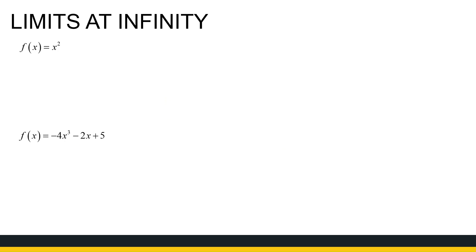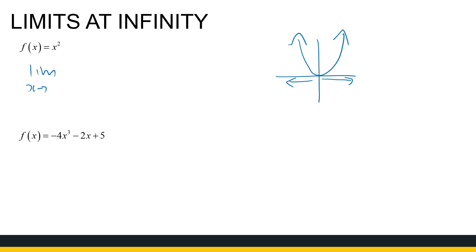Now let's look at x squared. We can look at a sketch — that one's easy to draw. As x approaches either positive or negative infinity, the values of x squared just get bigger and bigger, so they do not approach a specific number. The limit as x approaches plus or minus infinity goes towards infinity, so that limit does not exist.